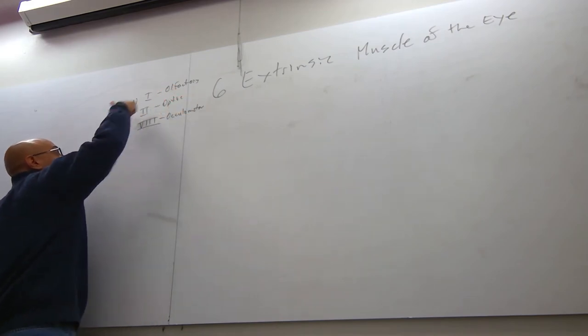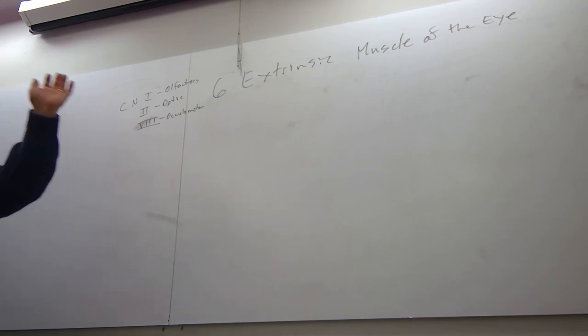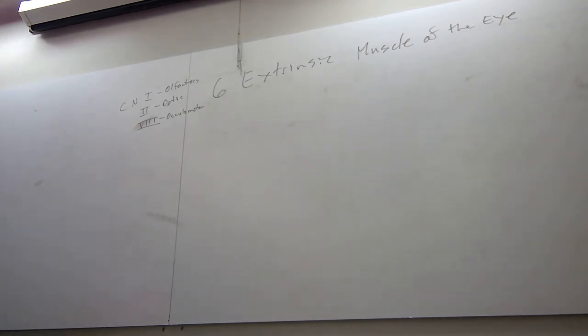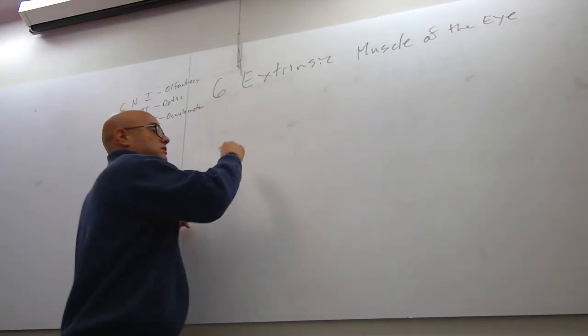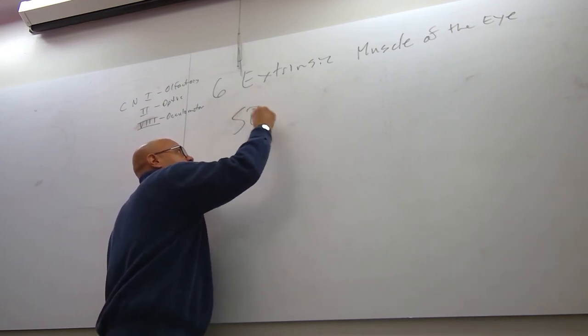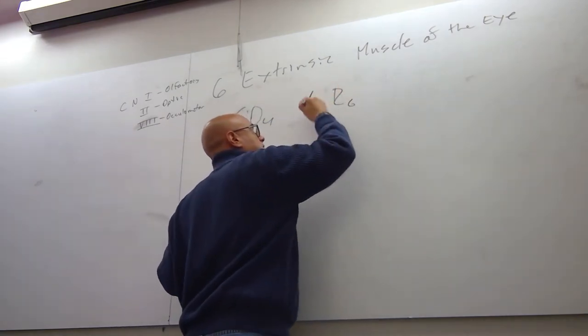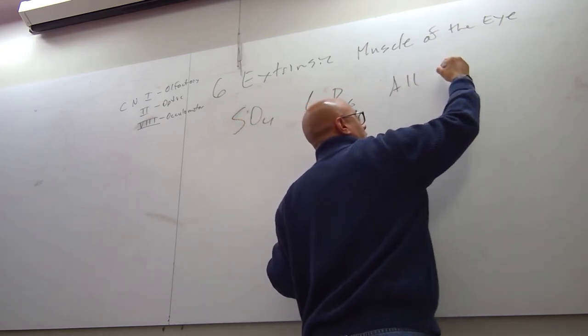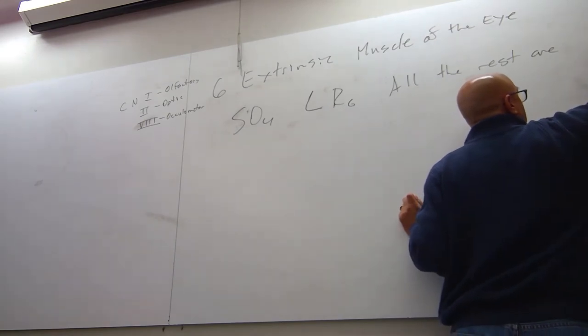There's only 12 cranial nerves. So you already know three of the cranial nerves are purely sensory. That means they're only sending information back into the brain. Because what does this have to do with the six extrinsic muscles of the eye? Because there's a mnemonic. SO4, LR6, all the rest are three.